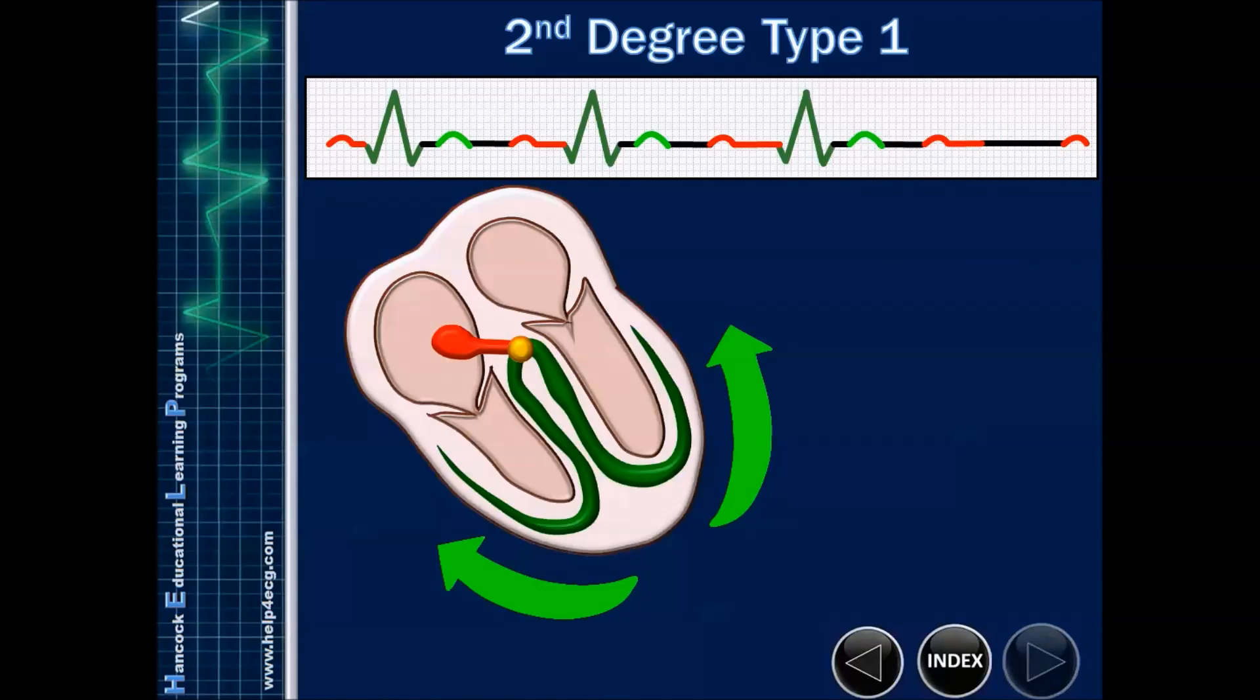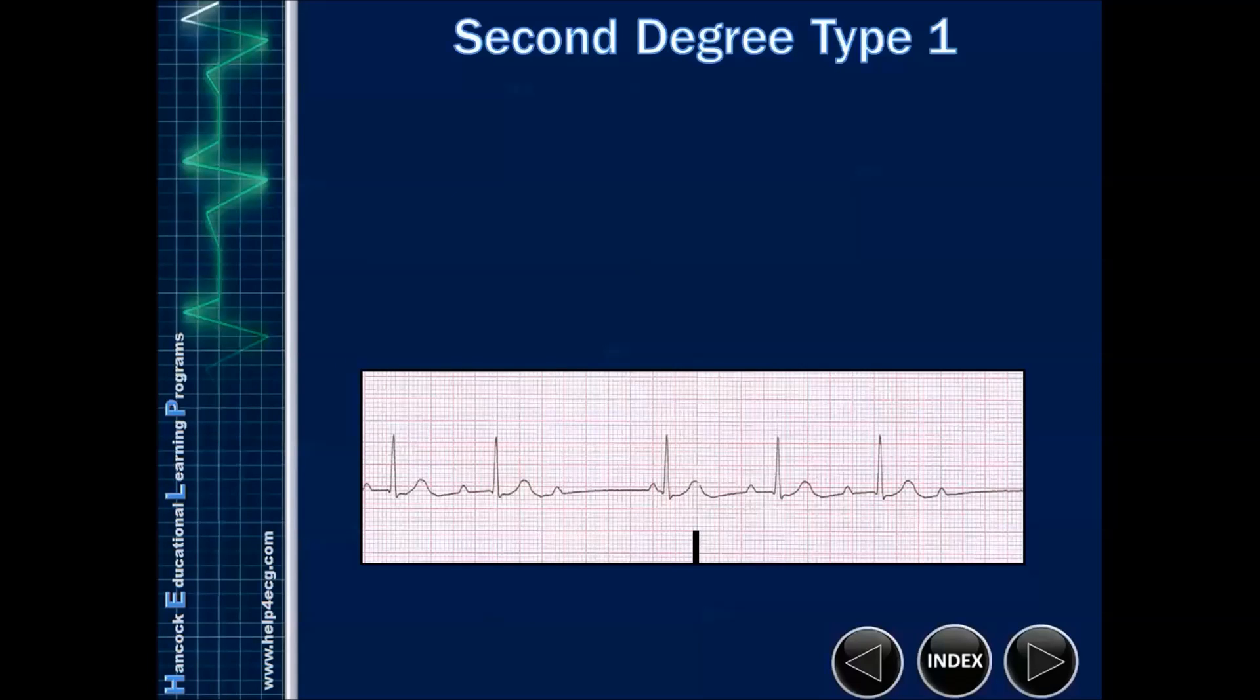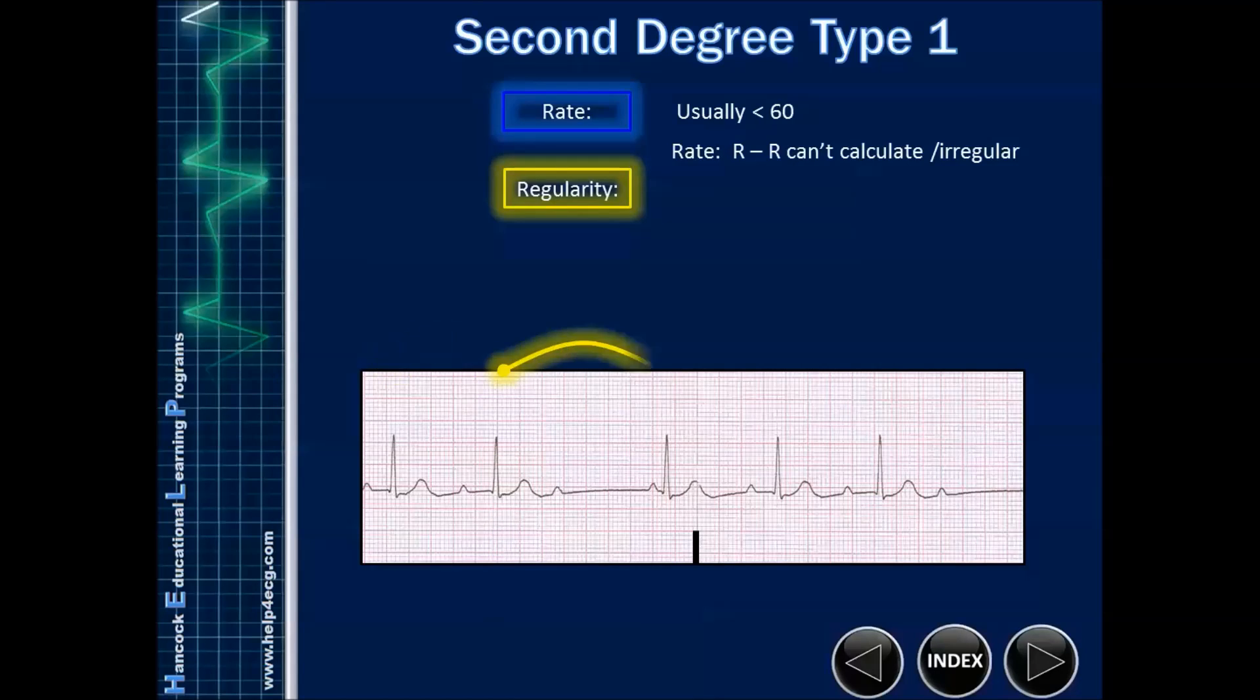It's important to remember that second degree type ones can have two-to-one, three-to-one variable conductions, but they always have an increasing PR interval, and that's the key in determining this. If we look at this on our actual strip, we see that the rate is usually less than 60 because of the dropped beats that occur. It's difficult to calculate an R-to-R here, so we're going to use our six-second strip and count the QRSs. In this case, we'd say the rate was about 50.